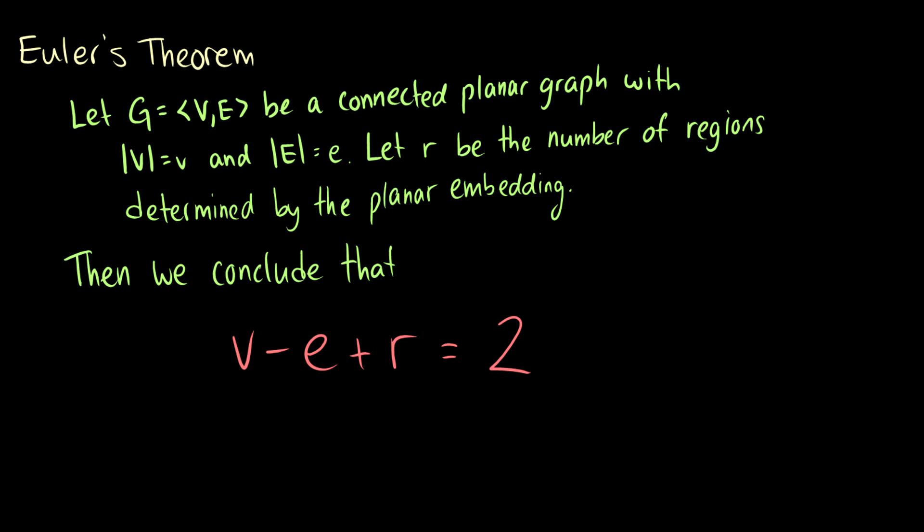Let G be a connected planar graph with the number of vertices equal to V and the number of edges equal to E. We introduce this new variable R, which is the number of regions determined by the planar embedding. We say that the number of vertices minus the number of edges plus the number of regions is always equal to 2.